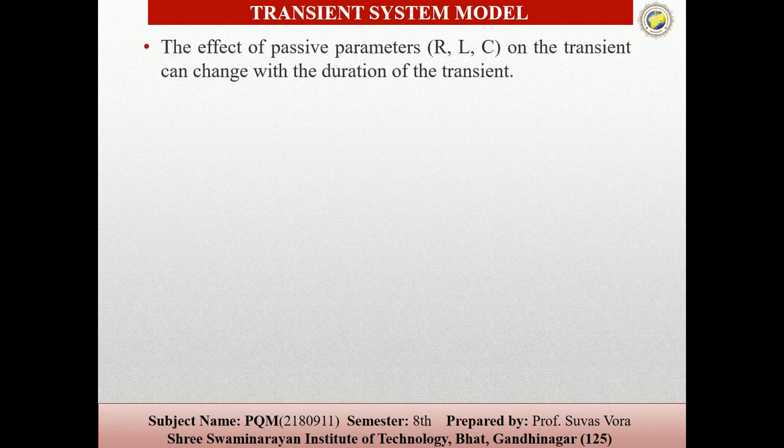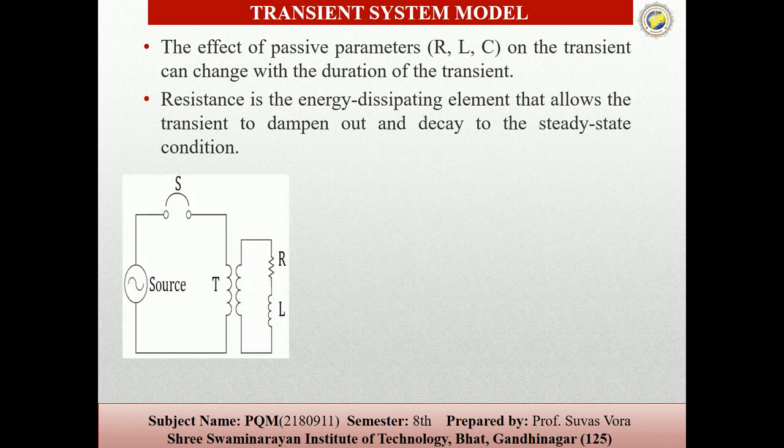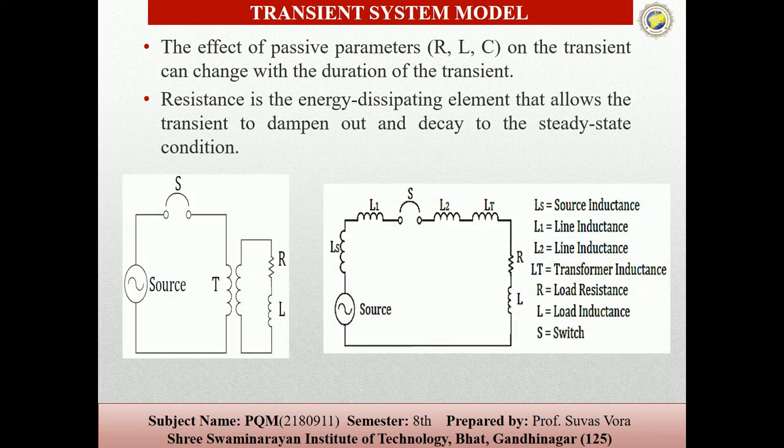For the transient system models, we basically use RLC, which are called passive parameters, and the transient can change with the duration of the transient using these passive parameters. The resistance is an energy dissipating element that allows the transient to damp out and decay to the steady state.